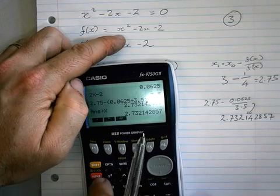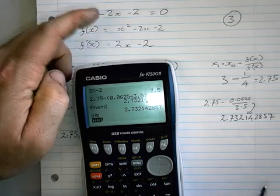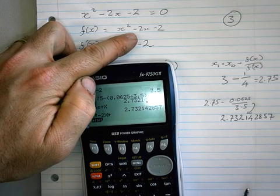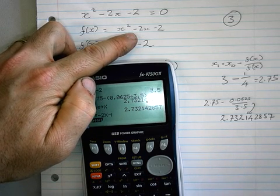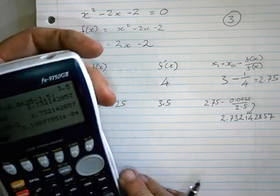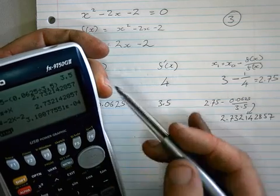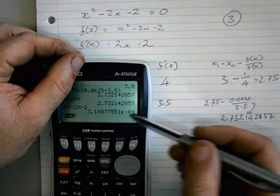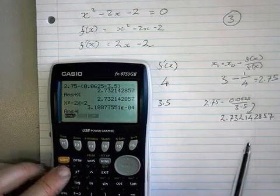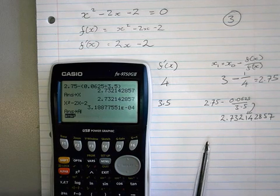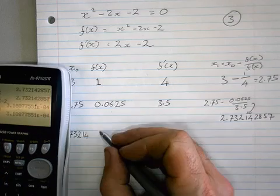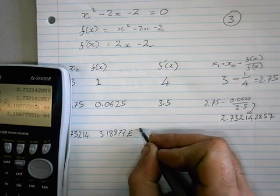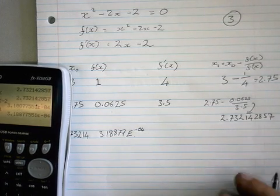So now I can go x squared minus 2x minus 2, and this time I get this funny number 3.18877 E negative 4. Now if you're getting something like that, try doing this. You get a really wobbly number like this number here. How about let's put that into A because it's too difficult to write down. So I'm going to write it here just as 3.18877 E negative 4.